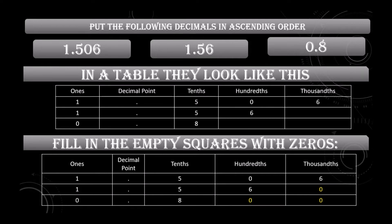The numbers are 1.506, 1.56, and 0.8. Now we will fill the empty squares with zeros — we have filled the squares with zeros like this.